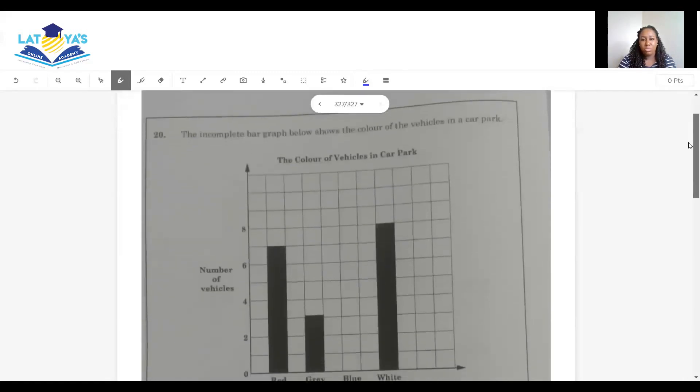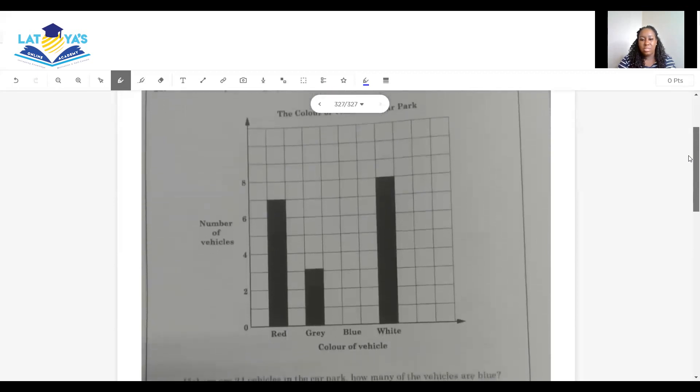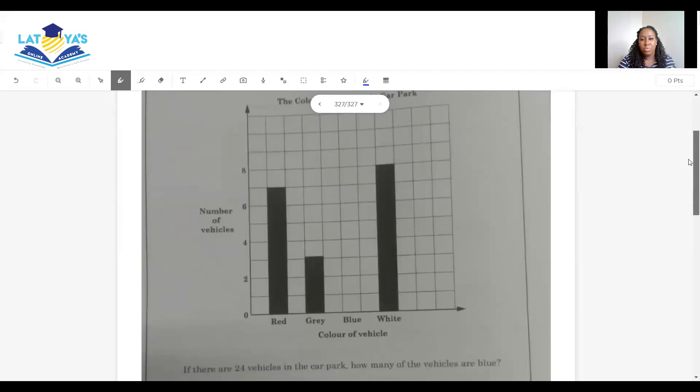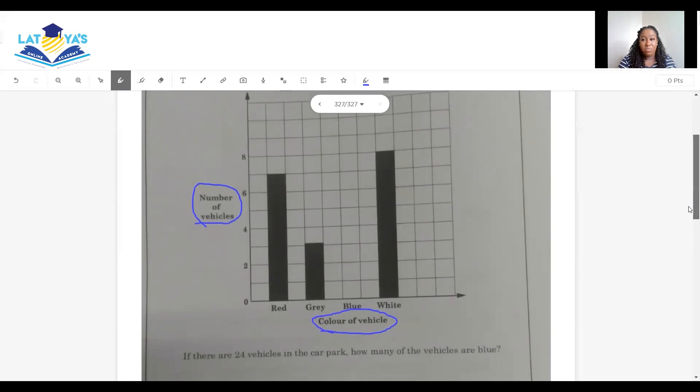Question 20. The incomplete bar graph below shows the color of the vehicles in a car park. The color of the vehicles are red, gray, blue, and white. They are telling us the number of vehicles here. The color of the vehicles. It's important that we read the entire graph before we attempt to answer the question. If there are 24 vehicles in the car park, a total of 24 vehicles in the car park, how many vehicles are blue? So how many vehicles are red? As we can see here, from 0 here, it would be 1, 2, 3, 4, 5, 6, 7. So the total number of red is going to be 7. Gray is 3. Blue, we don't know. White is 8.